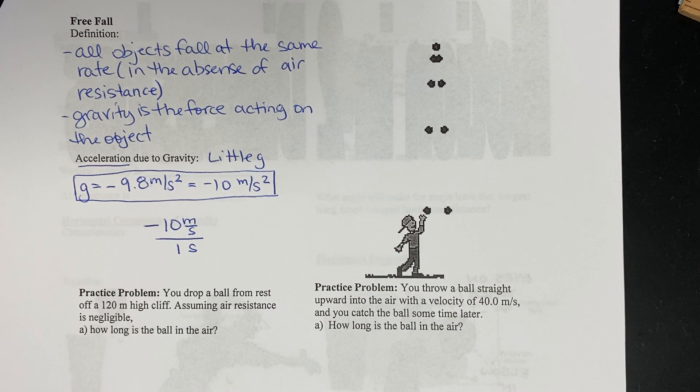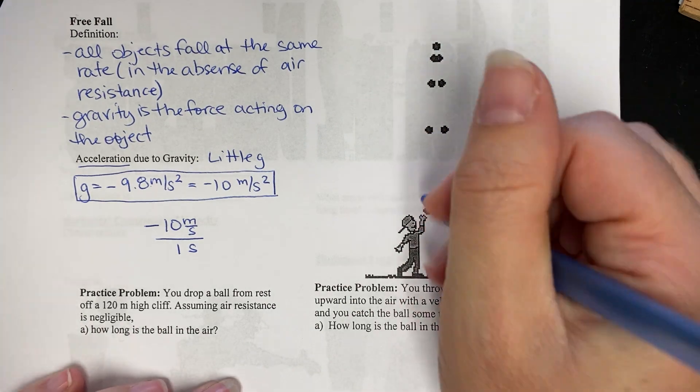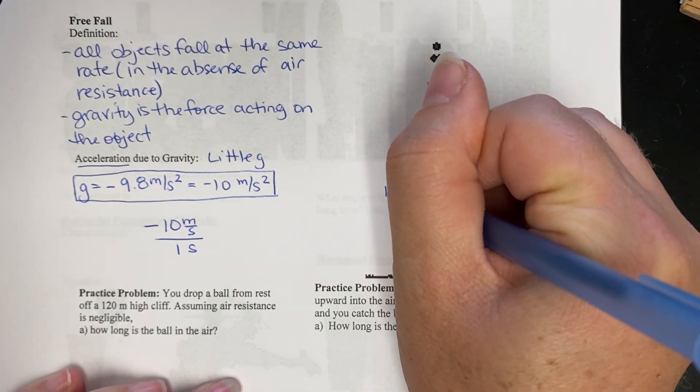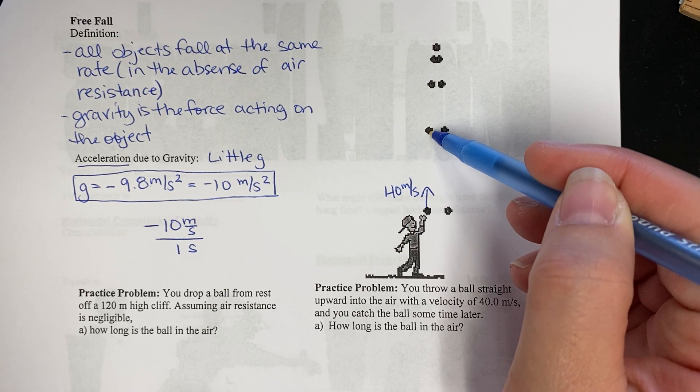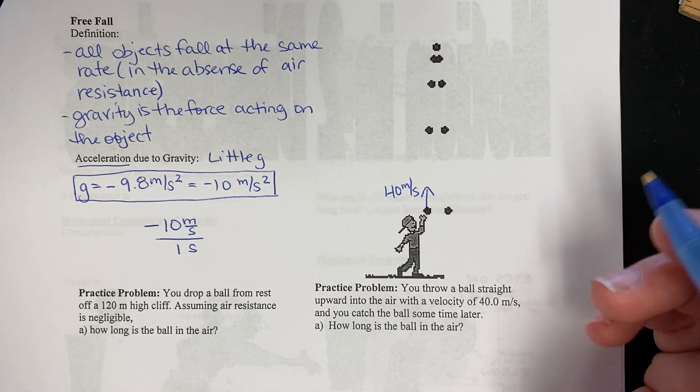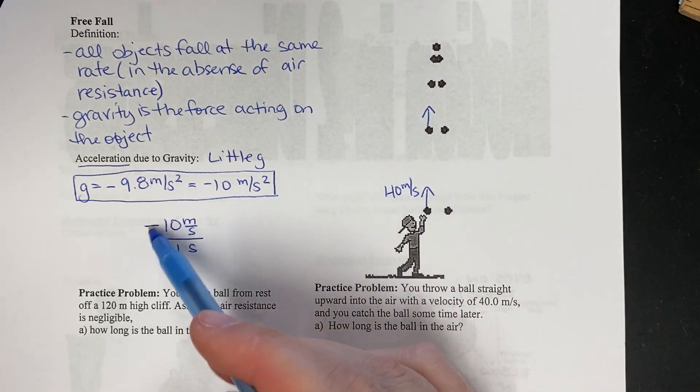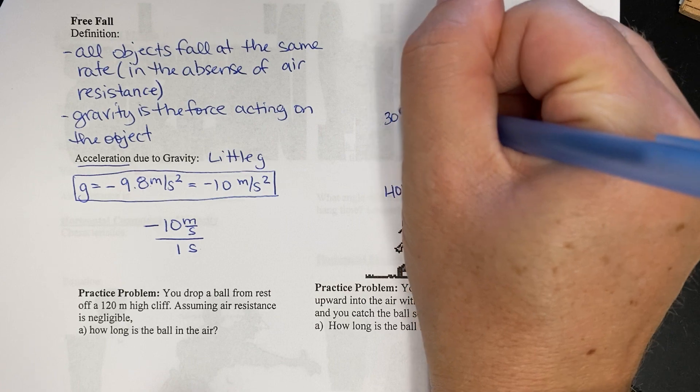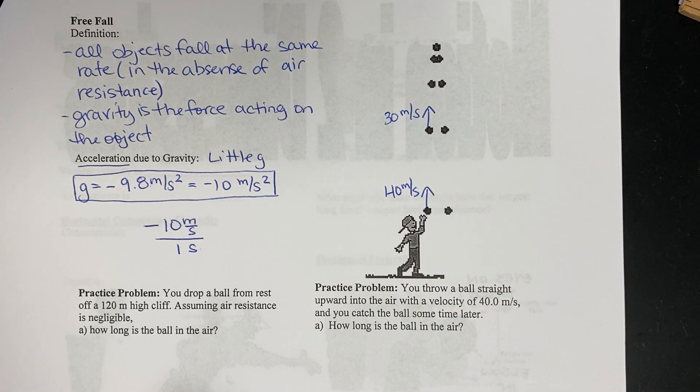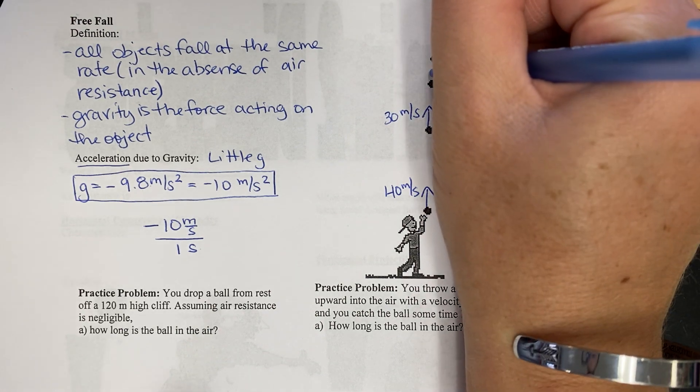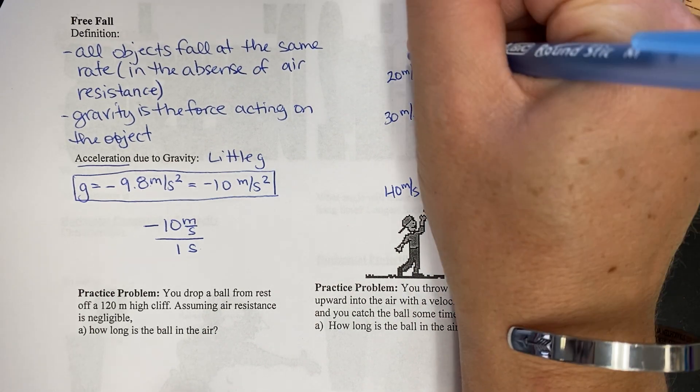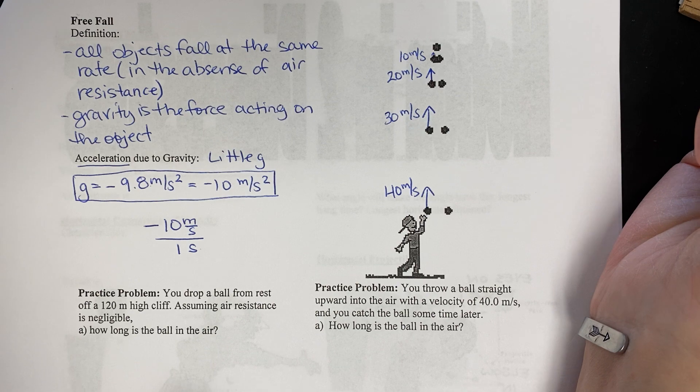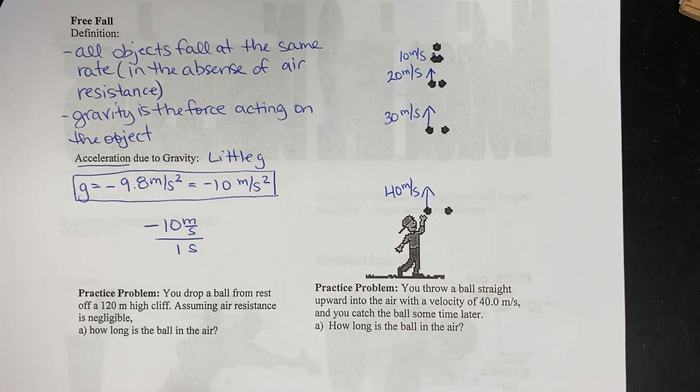So for example, if this person here throws a ball up in the air with a speed of 40 meters per second, and I tell you that this ball is one second later, what's the speed? Well, if we lose 10 meters per second every one second, then we would expect that one second later, the speed would be 30. And one second later from that, the speed would be 20. And one second later from that, the speed would be 10, right? So we're losing 10 meters per second every one second, or we're decelerating or slowing down.